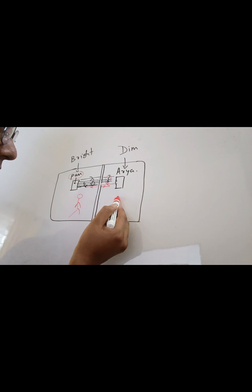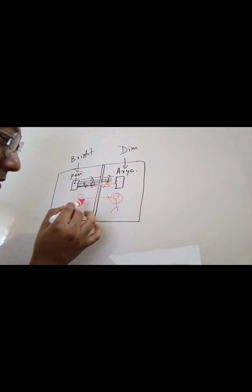So basically what happens is when I am on the bright side I see myself and therefore for me this surface acts like a mirror. Whereas for Arya, Arya is able to see me only, right? So therefore for Arya this surface will look like a transparent glass.